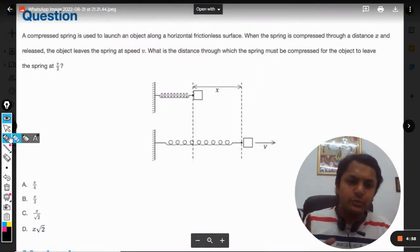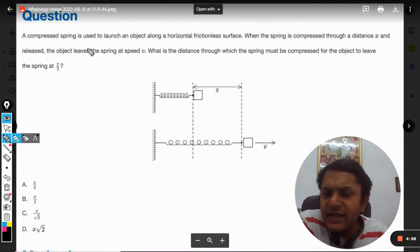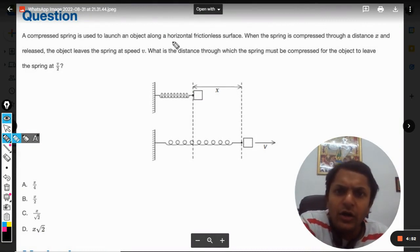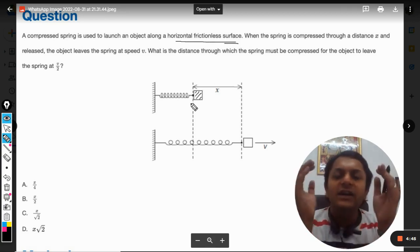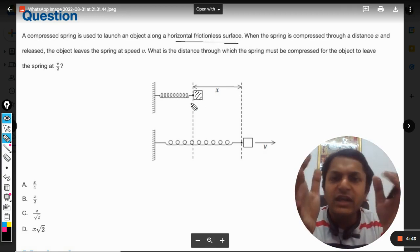This seems to be a very good question. A compressed spring is used to launch an object along a horizontal frictionless surface. So technically, this object is not connected with the spring - they are two different bodies, one is the spring and another is the body.